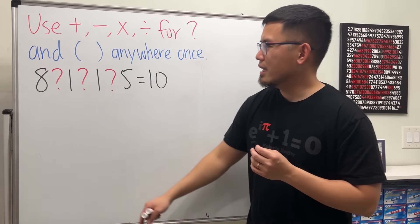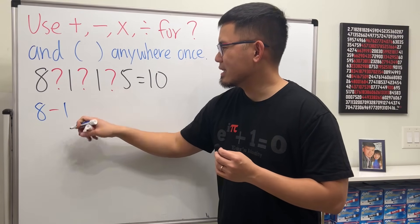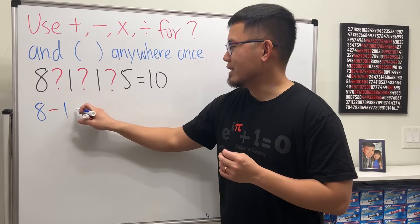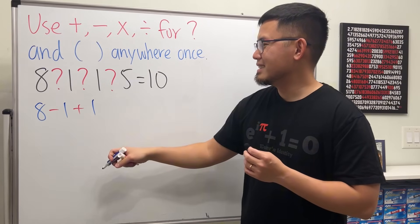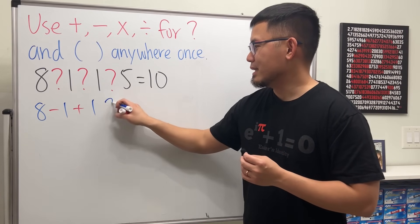If we do subtraction, then let's say 8 minus 1, that's 7, plus 1, that's 8. And then what do we do? It's a 5, right? So no.